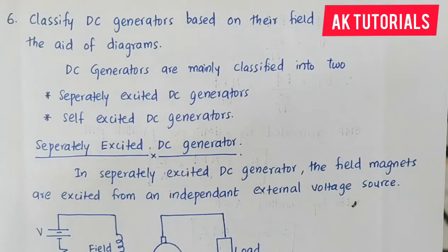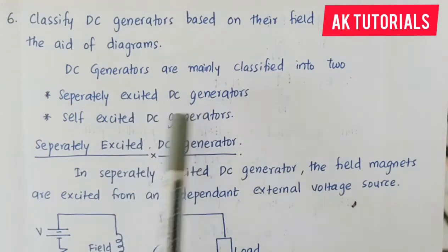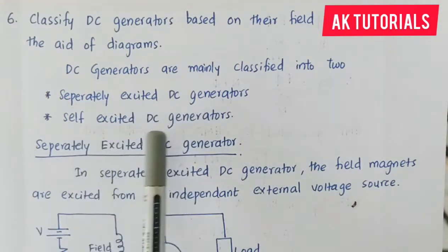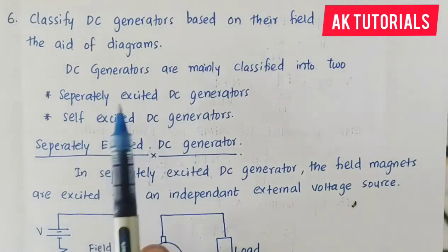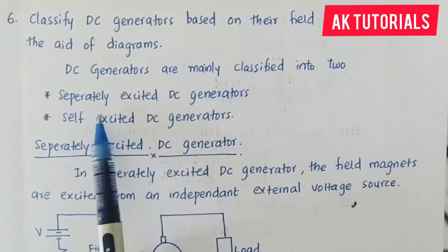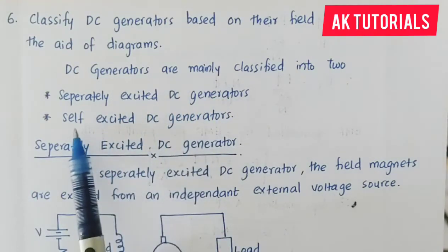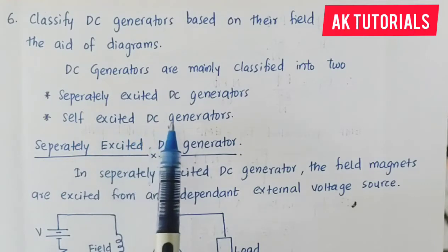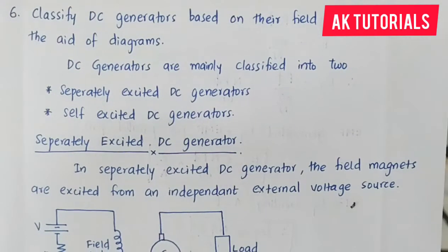The DC generator is classified into two types: first, separately excited DC generator, and second, self-excited DC generator.